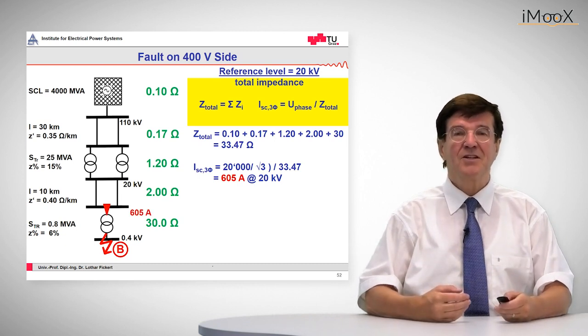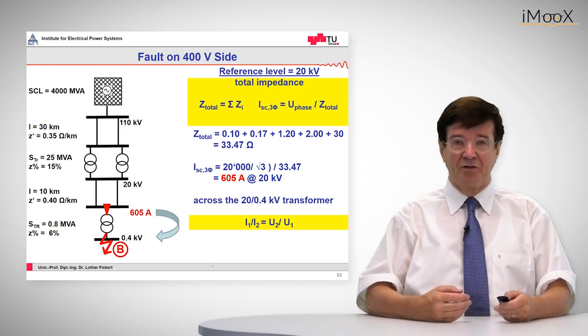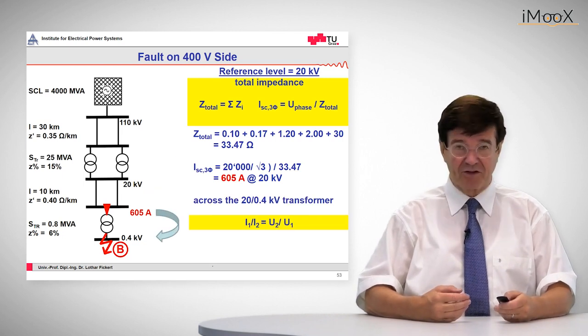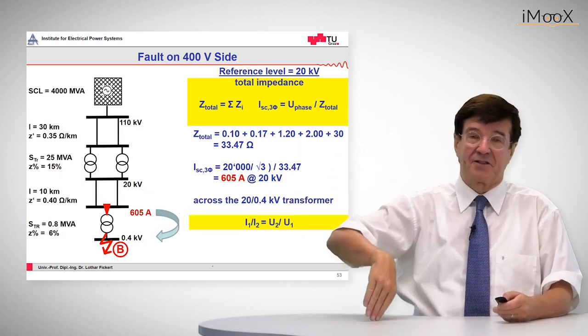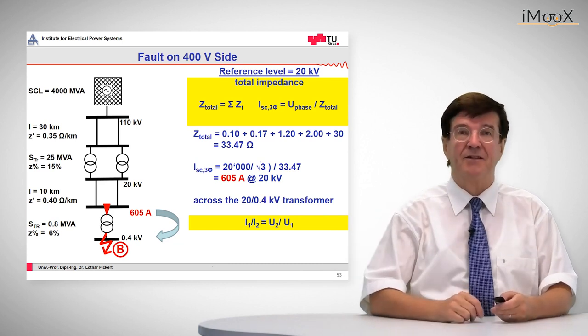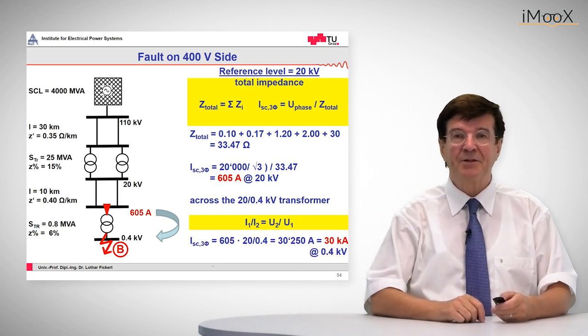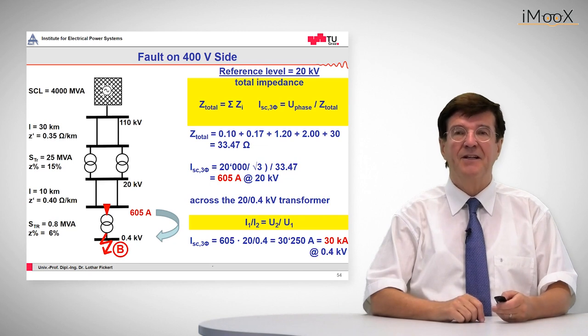Now the question is, what is the current on the low voltage side? So for the low voltage side, we have to transfer this across the transformer by applying the voltage ratio, and here we obtain a value of 30 kA.